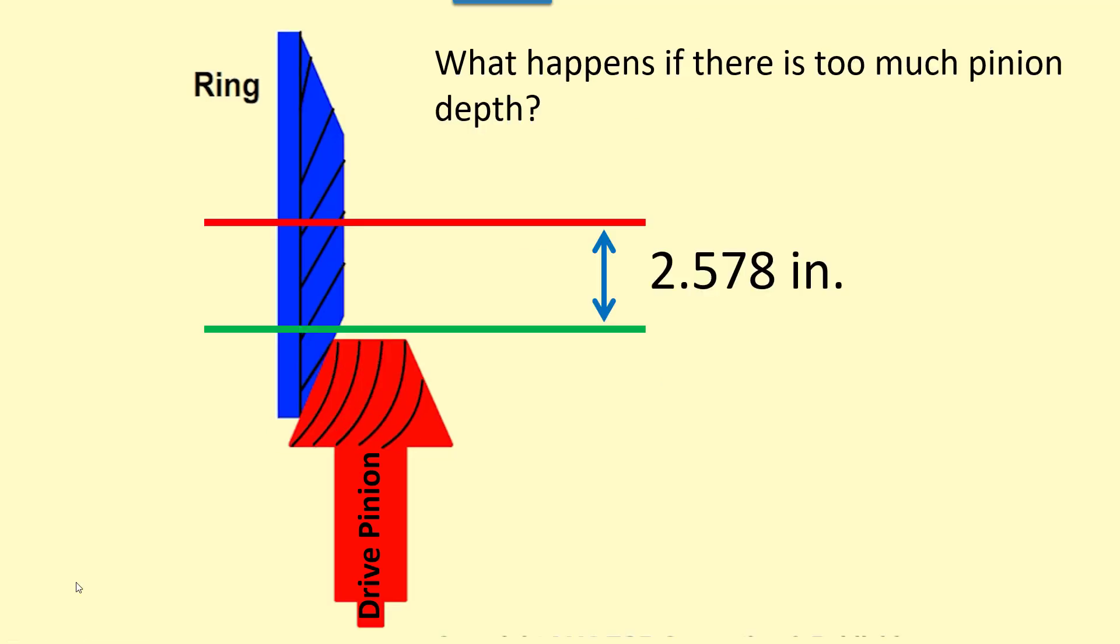What happens if there is too much pinion depth? The head of the pinion is too far away from the ring gear center line and the measured depth is larger than ideal. The ideal value is known as the pinion depth specification.